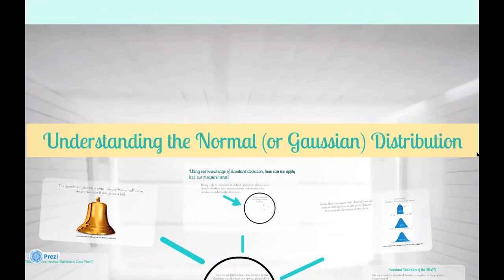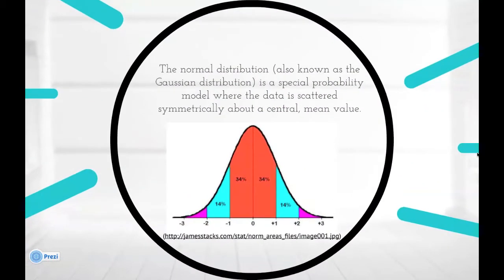Understanding the normal or Gaussian distribution. The normal distribution, also known as the Gaussian distribution, is a special probability model where the data is scattered symmetrically about a central mean value.